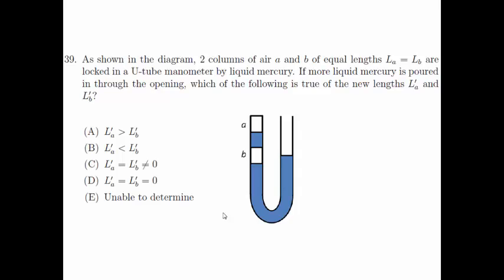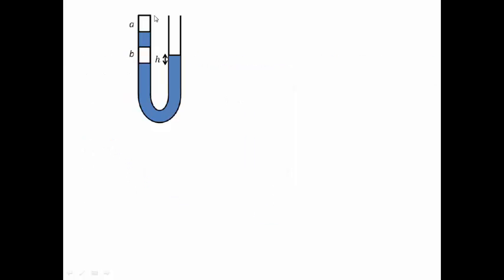To begin solving this question, we first look at the formulas describing the pressure exerted by the air columns in B and A. Looking at the U-tube manometer diagram, there's a height difference between the two tubes. Let's denote this height difference as h. The pressure due to air column B is PB = Patm + ρgh, where ρ is the density of liquid mercury.